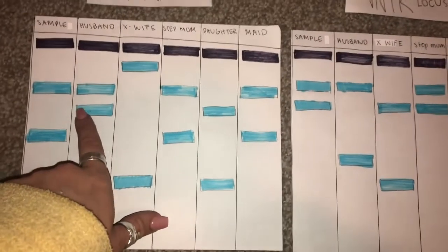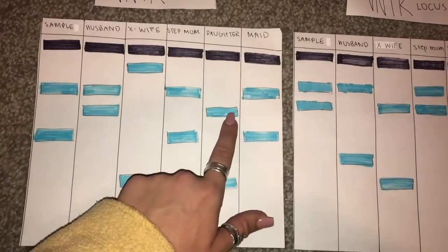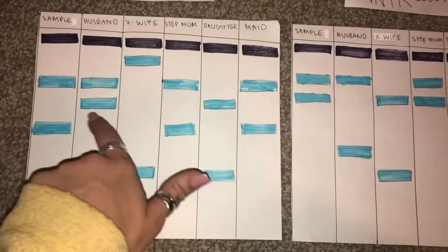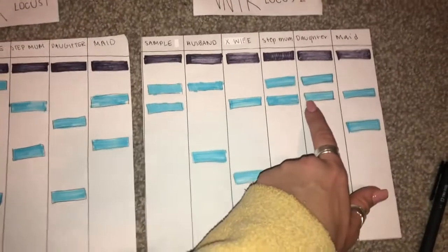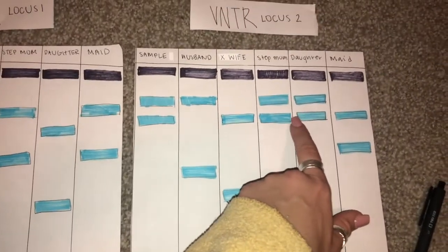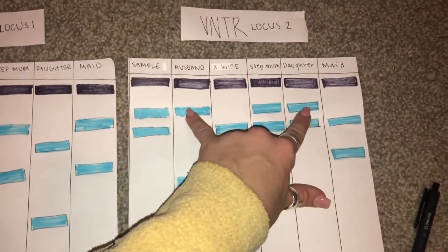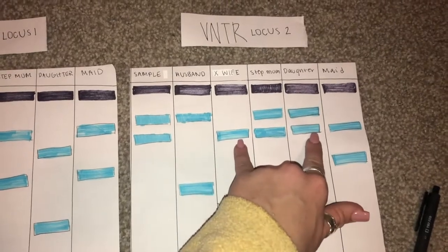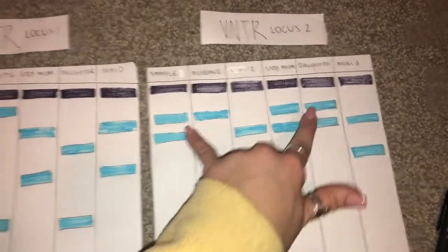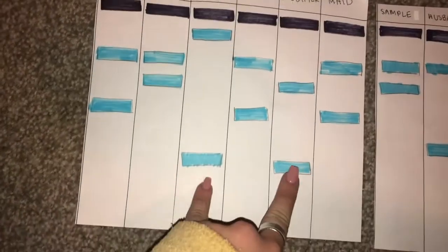We can also note that the husband is the father of the daughter and has matching DNA — 50% of the DNA at both VNTR loci, for this one and this one. And the ex-wife also shares the other 50% of the daughter's DNA, here and here.